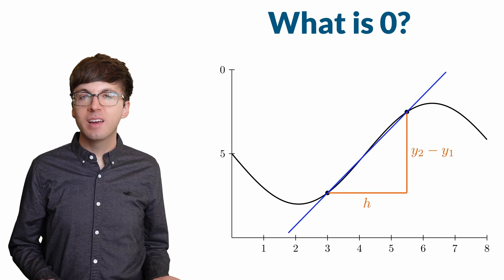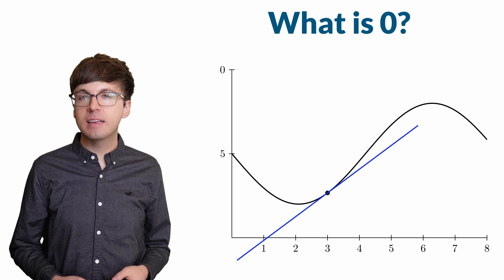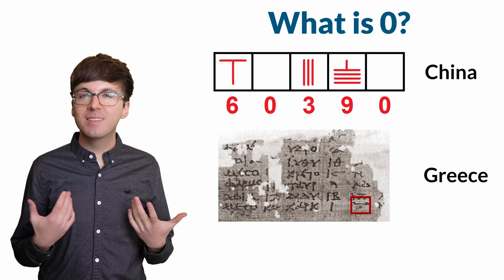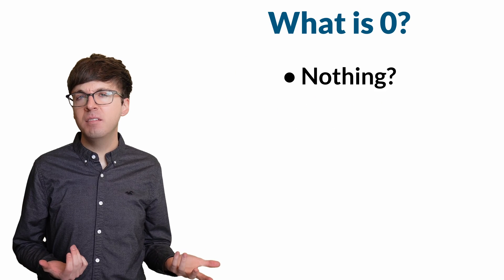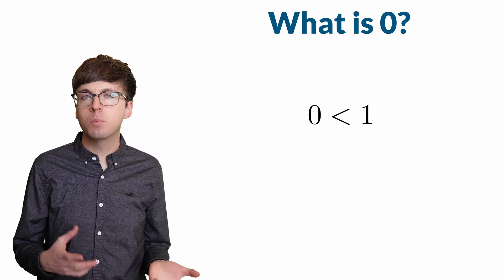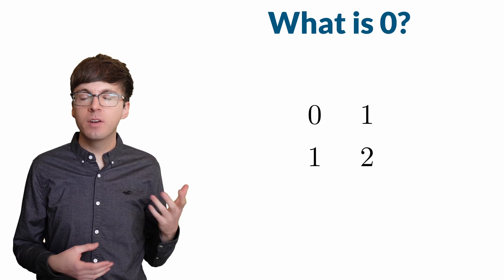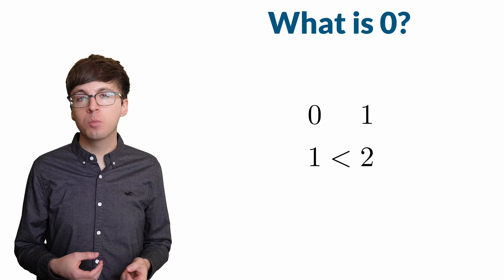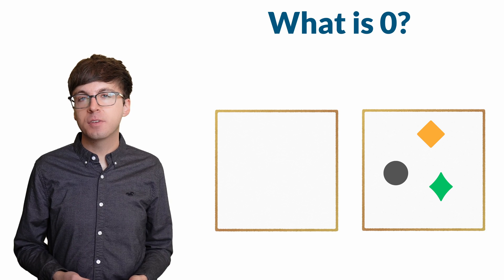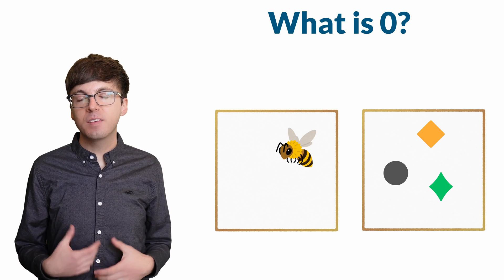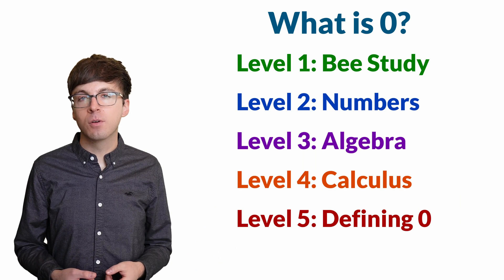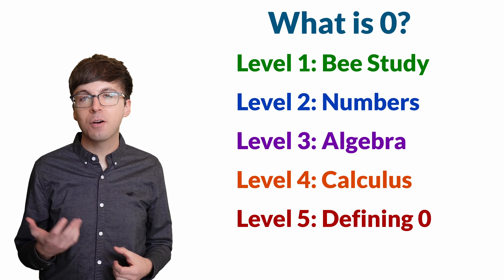Zero allows our computers to work. It's the counterpart of infinity in calculus, and it's one of the most useful numbers in all of math. But what exactly is it? Nothing? Emptiness? Young kids often have a hard time understanding that zero is smaller than one. And even for adults, comparing zero and one often takes more processing time than comparing one and two. Yet even bees show understanding of zero and its place in the number line. Let's explore zero in five levels, ranging from a study about bees' understanding of zero to the role of zero in calculus and beyond.